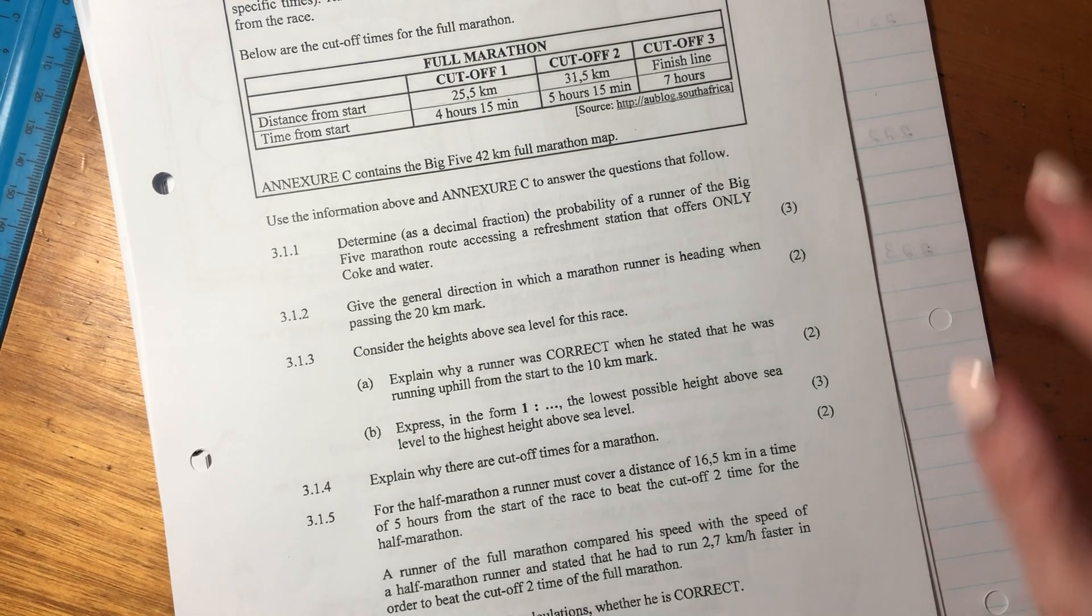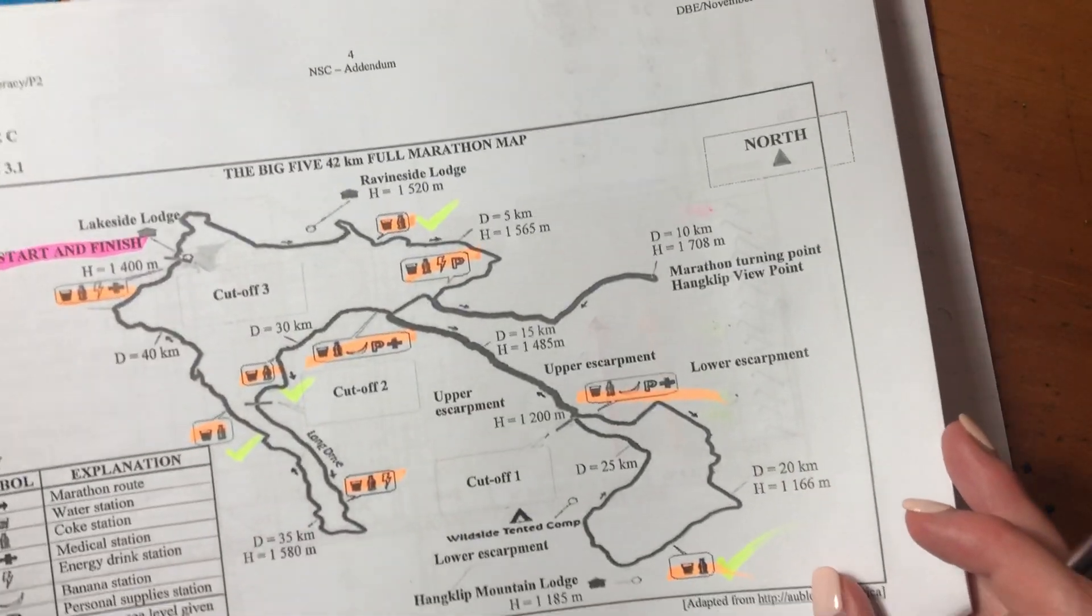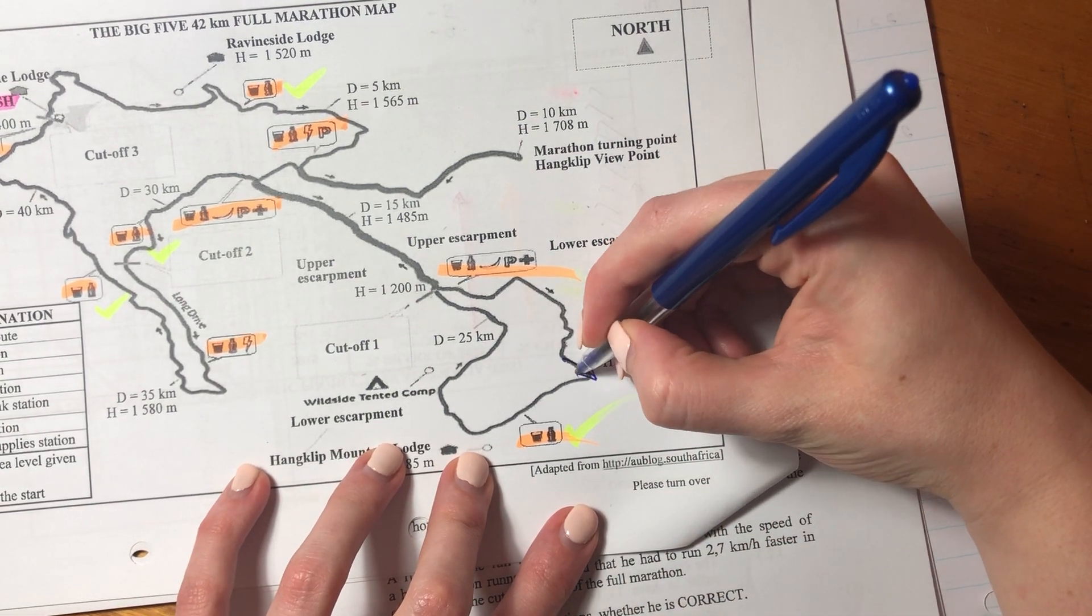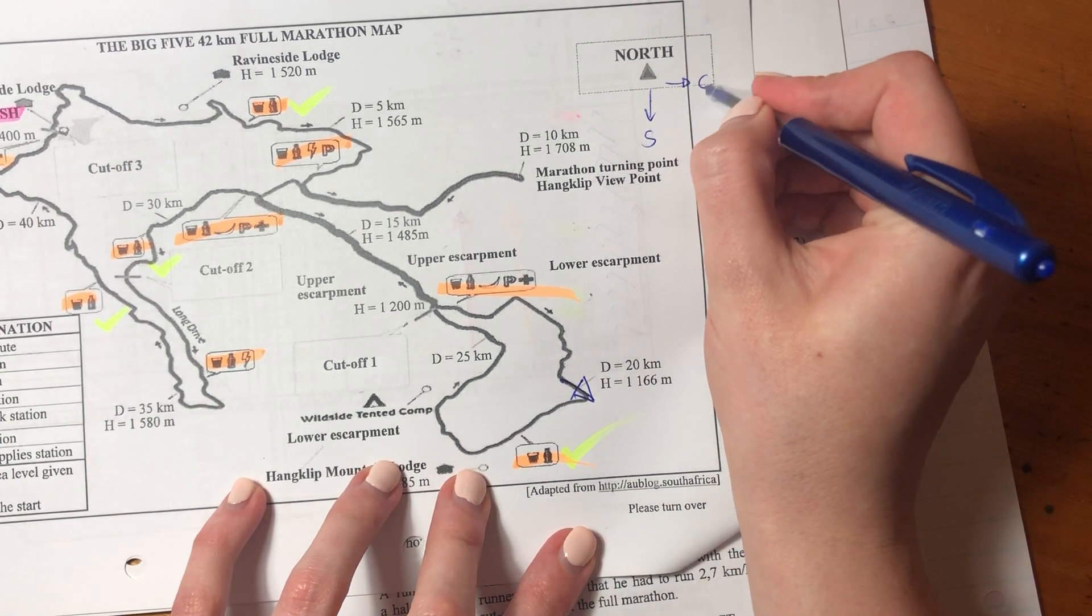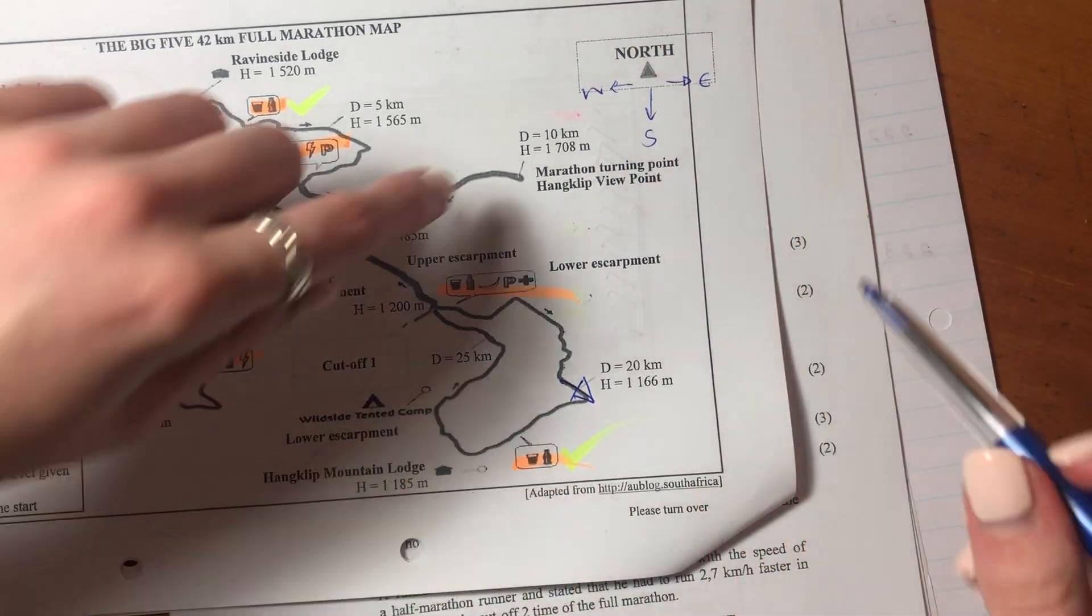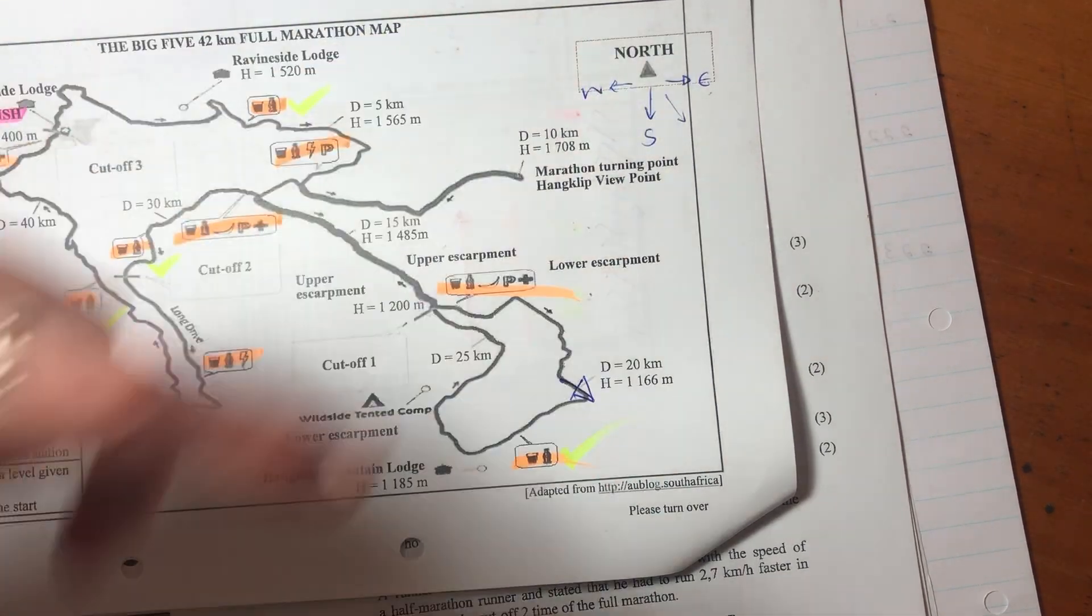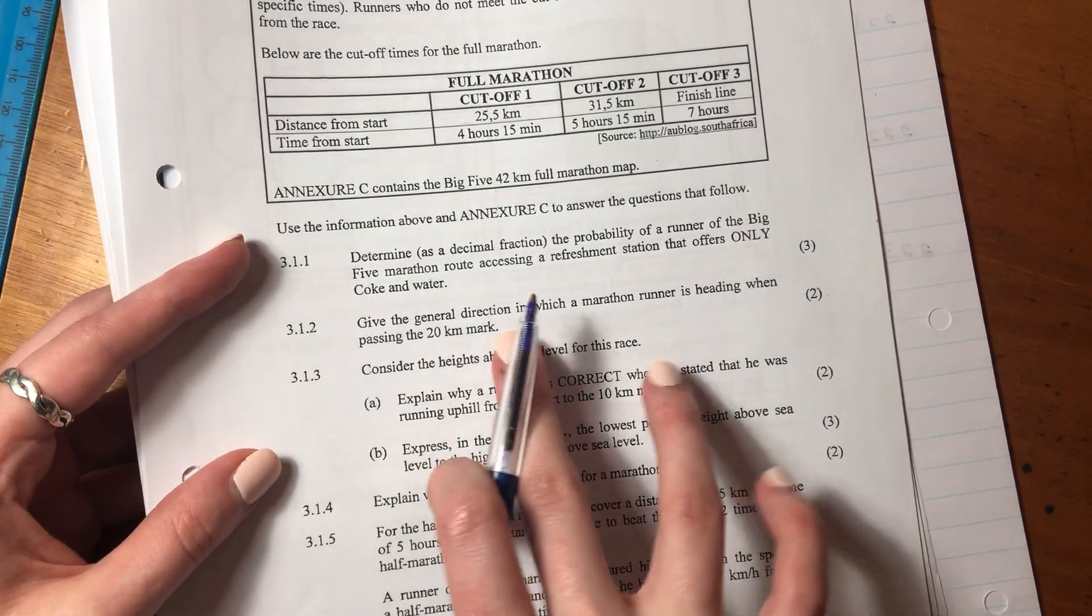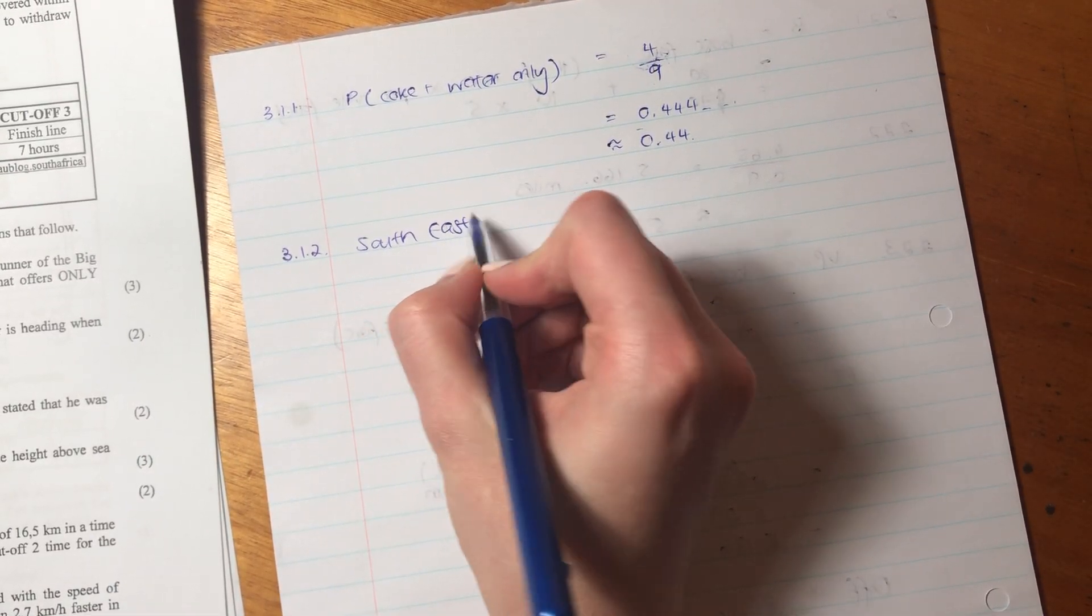Let's now go to the next question. So it says, give the general direction in which a marathon runner is heading when passing the 20-kilometer mark. So let's go back to annexure C. So 20 kilometers is down here, so he's kind of heading in that direction. So if we know that north is up, we know that south is down. That's east, that's west because remember, it's never eat silkworms—that's how I remember it. So you have northeast, and this is kind of pointing somewhere in between here. So I'm going to say southeast. So that is the direction that the runner will be running in when he gets to the 20-kilometer mark: southeast.